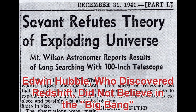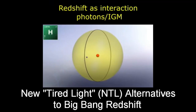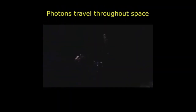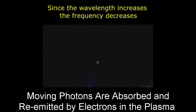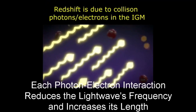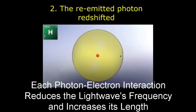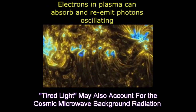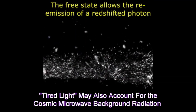Edwin Hubble, who discovered redshift, did not believe in the Big Bang. New tired light alternatives to Big Bang redshift propose that moving photons are absorbed and readmitted by electrons in the plasma. Each photon-electron interaction reduces the light wave's frequency and increases its length.